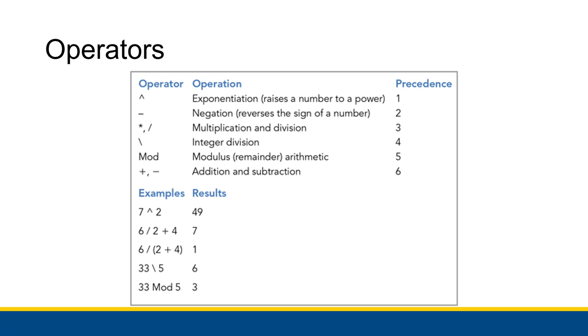The operators in Visual Basic are as follows. We have exponentiation, which raises the number to a power. You would type out this character by pressing Shift and then pressing 6. It is above the 6 button on your keyboard if you have a standard US American English QWERTY keyboard.